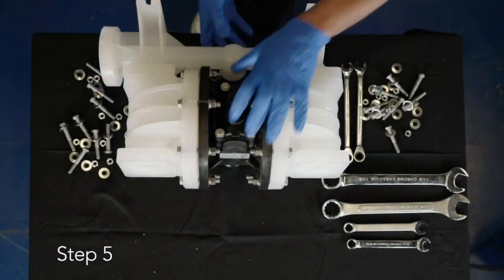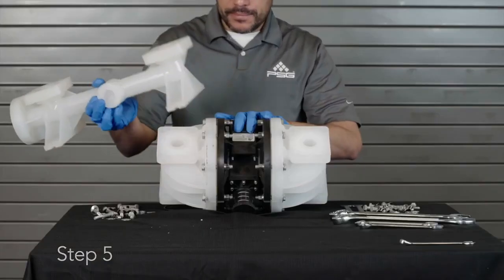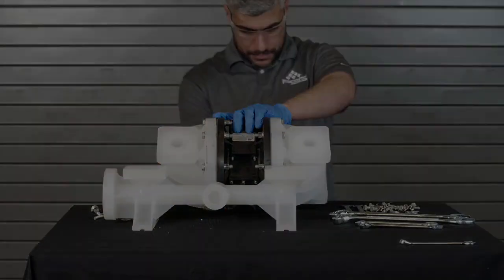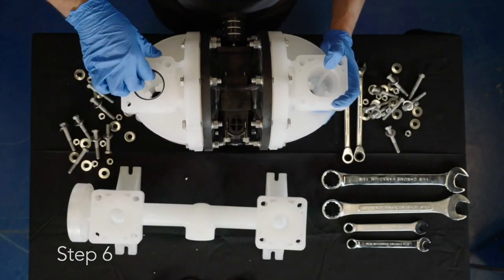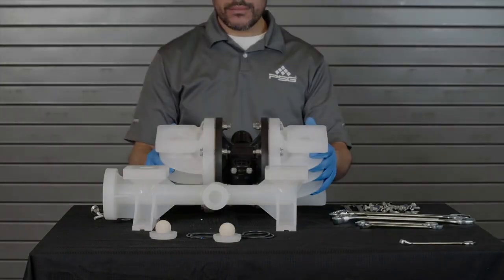Step 5: Once the screws, washers, and nuts are removed, remove the suction manifold. Step 6: Remove the O-ring, valve seat, and ball from the outer chamber.